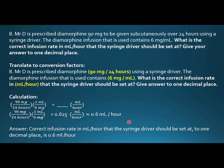Now the question asked to give the answer to one decimal place, so we need to make this 0.6 mL per hour. So the correct infusion rate in mL per hour that the syringe driver should be set at, to one decimal place, is 0.6 mL per hour.